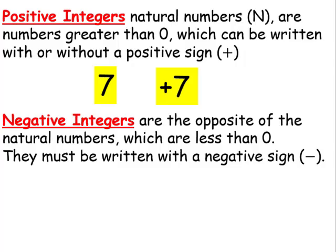Negative numbers are the opposite of natural numbers, which are less than 0. They must be written with a negative sign, or a minus sign.